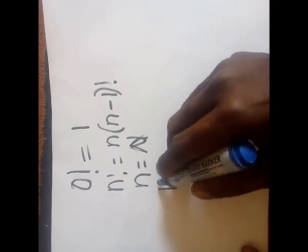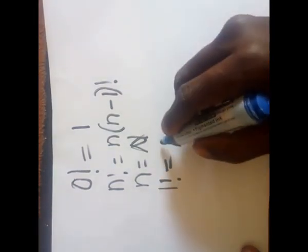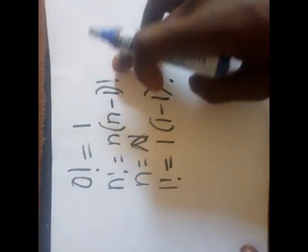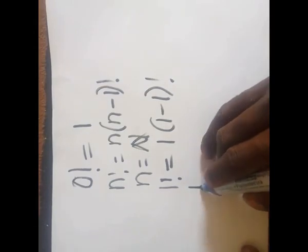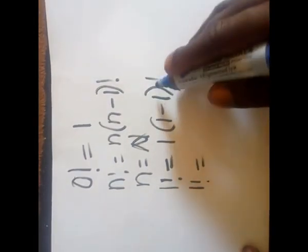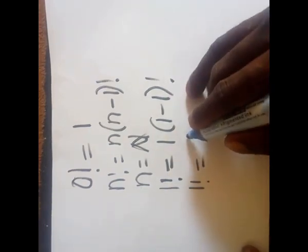We know that 1 factorial equals 1 times (1-1) factorial, based on this relation. We know that 1 factorial is 1, and 1 multiplied by any number is just that same number, so we have 0 in this bracket because 1 minus 1 is 0.